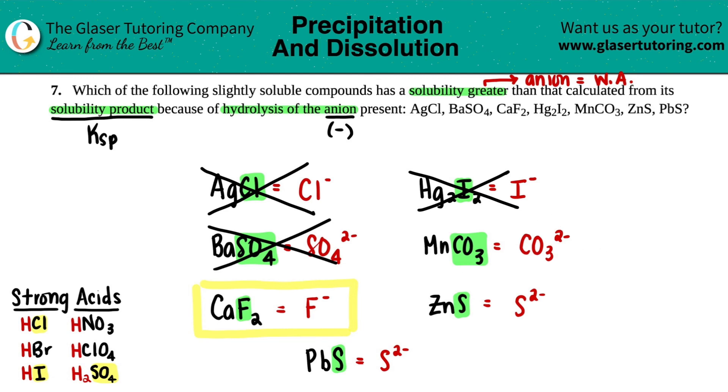Next, CO3 2 minus. Do I see a CO3 2 minus or a CO3 as one of my strong acids? Nope, that means it came from a weak acid, so that's one of the answers.